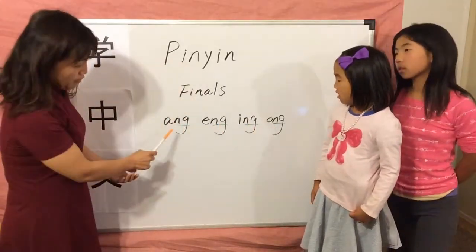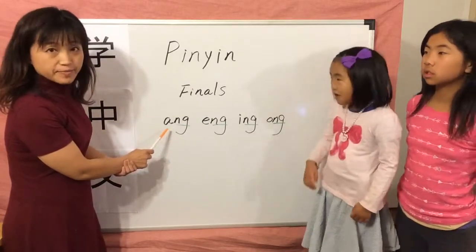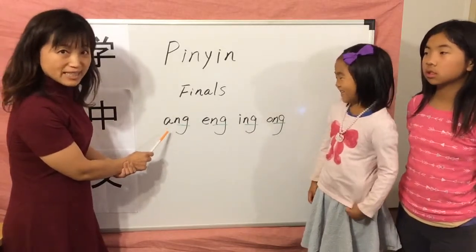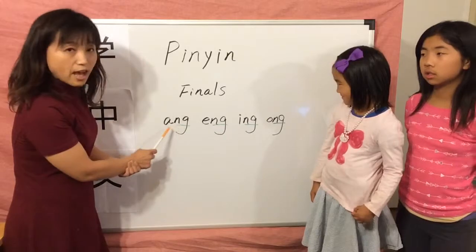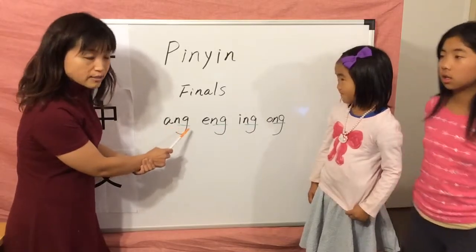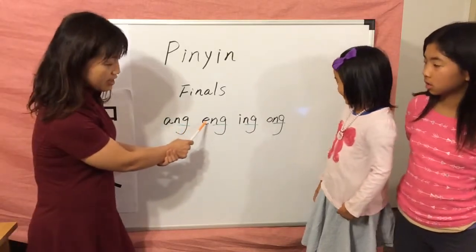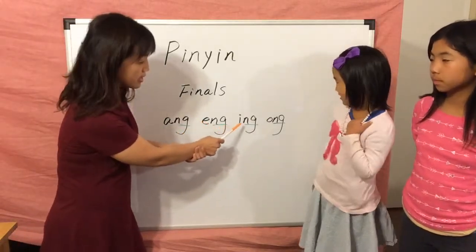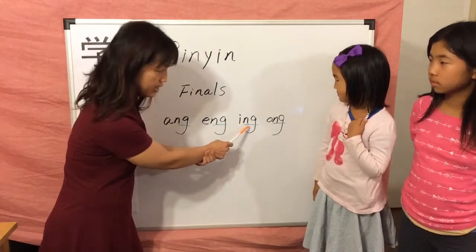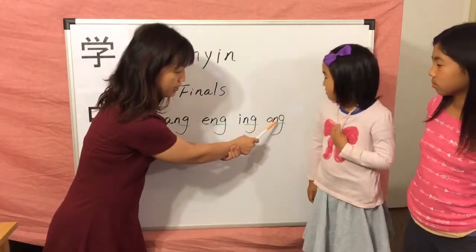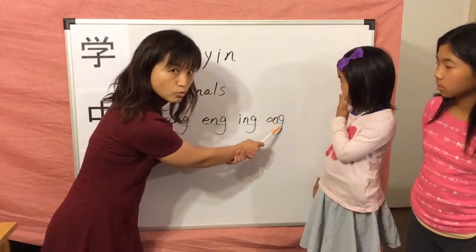The first one starts with 'a': ang. The second one starts with 'e': eng. The third one starts with 'i': ing. The fourth one starts with 'o': ong.